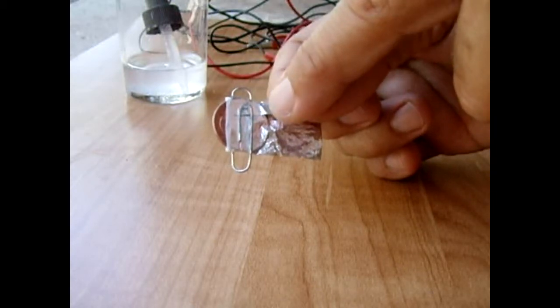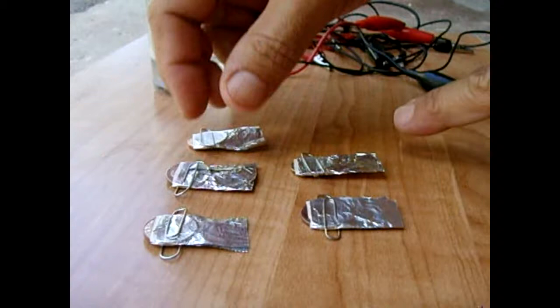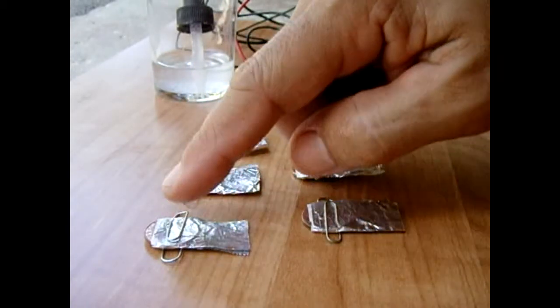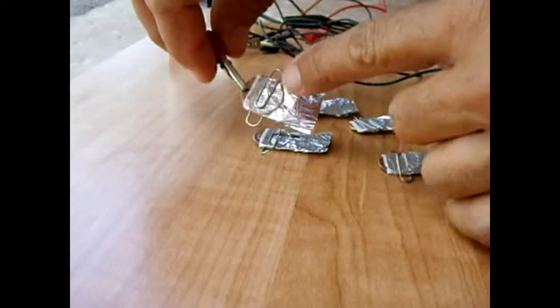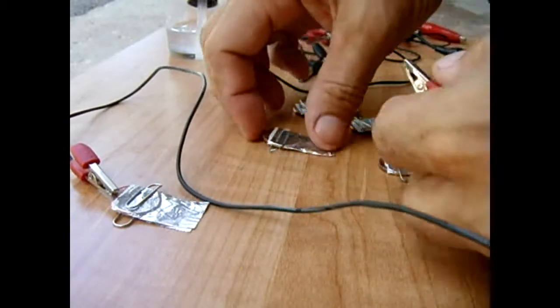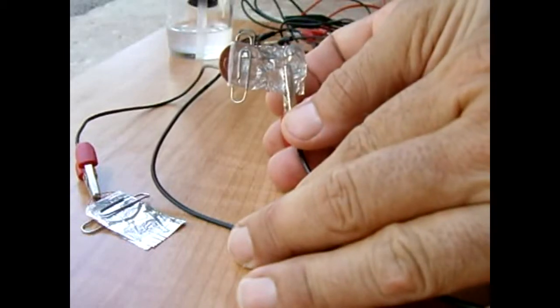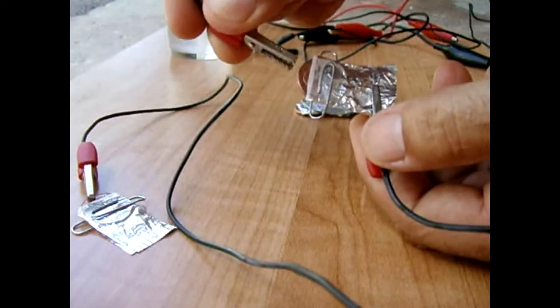Okay, once all five are complete, these will be activated with the solution once I connect them all together in series. To connect them in series, you're going to go from the copper of one to the aluminum of another like so. From the second one you connected to, you're going to go from the copper of that one to the aluminum of another.